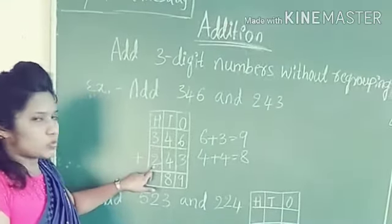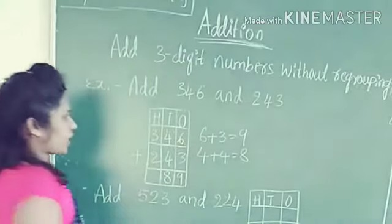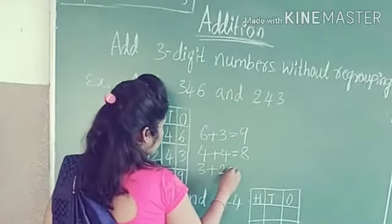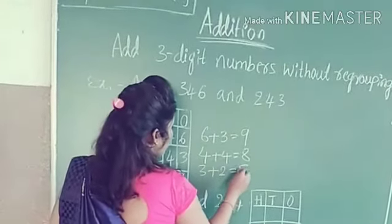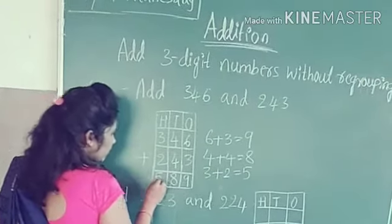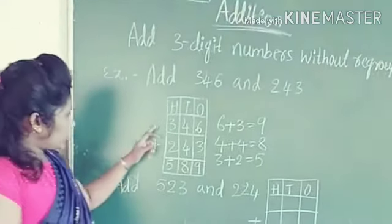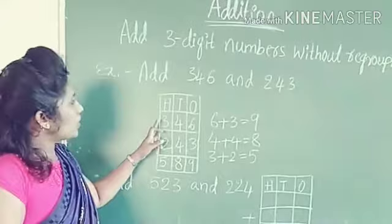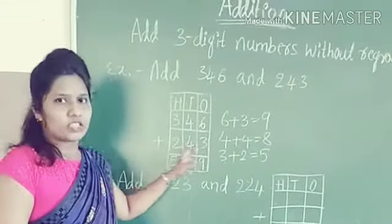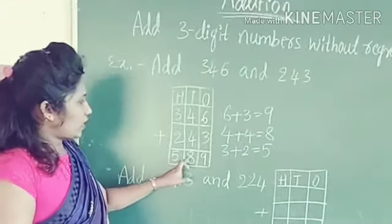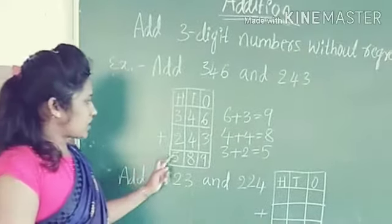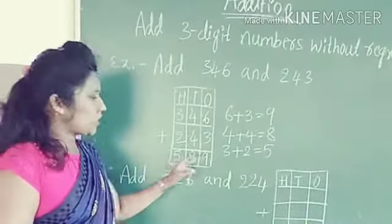Now we add the numbers at the hundreds place. 3 plus 2 — how much? Yes, 5. 3 plus 2 is equal to 5. So I write 5 at the hundreds place. The number 346 plus 243 is equal to 589. The answer is 589.